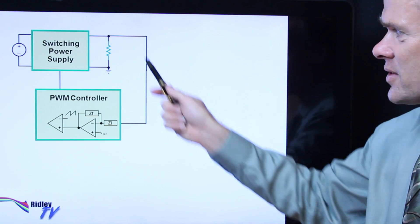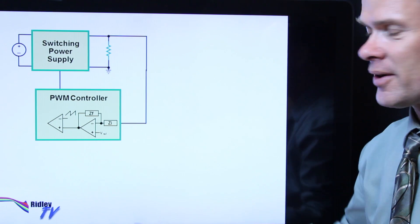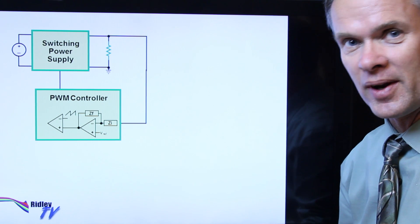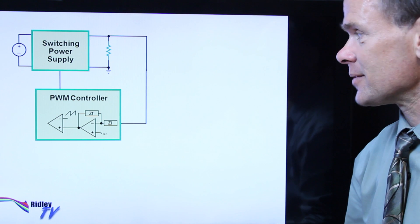What we've created now is a feedback loop around the system, and these power converters can be quite complicated. So the first thing we have to do is measure exactly what it is that we have for a loop gain in the system.